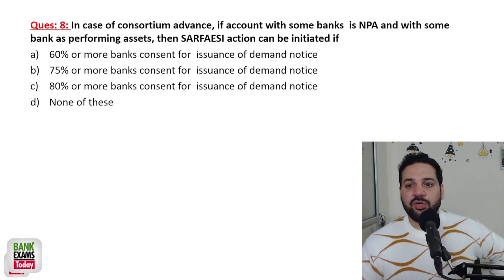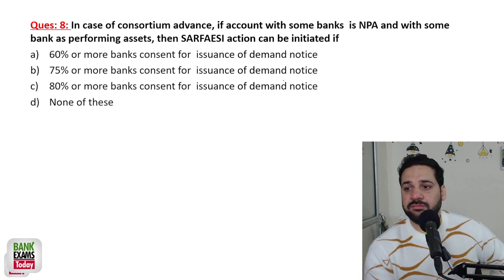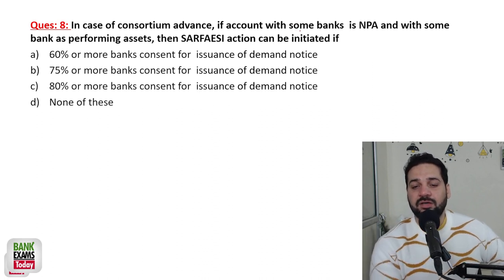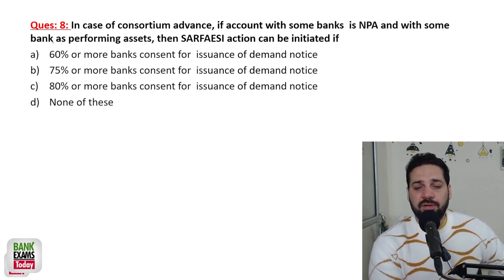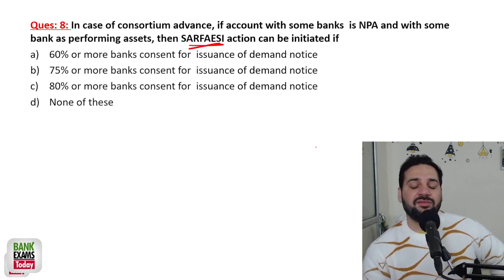In case of consortium of advances, if the account with some banks is NPA but with other banks is a performing asset, then the SARFAESI Act must be initiated.